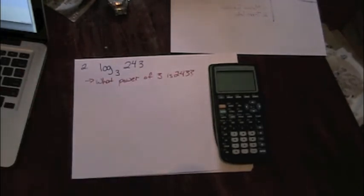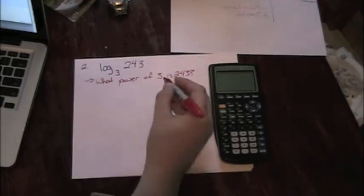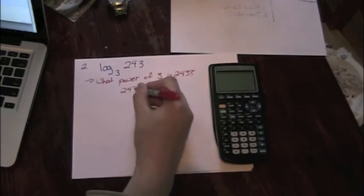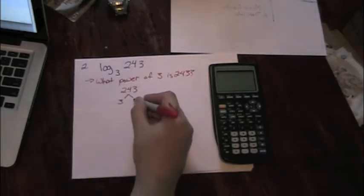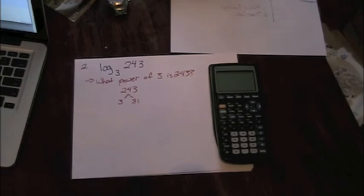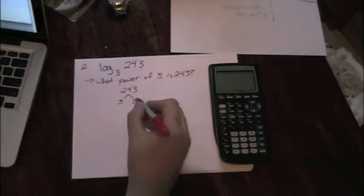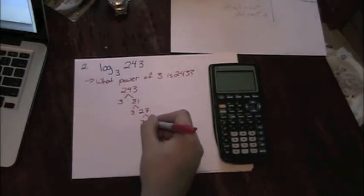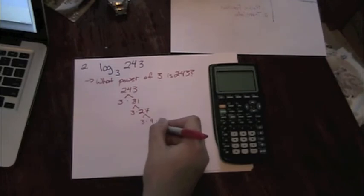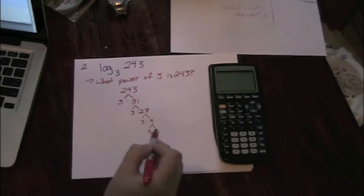The second thing that we can do is to take a look at 243 and see if it is actually a power of 3. And to do that, I might go about it by factoring 243. If I divide by 3 once, I'm left with 81. And I hopefully can begin to see that this might work out for us. If I divide by 3 a second time, I'm left with 27. If I divide by 3 a third time, I'm left with 9. And if I divide by 3 a fourth time, I have 2 more 3s. So that's 1, 2, 3, 4, 5.